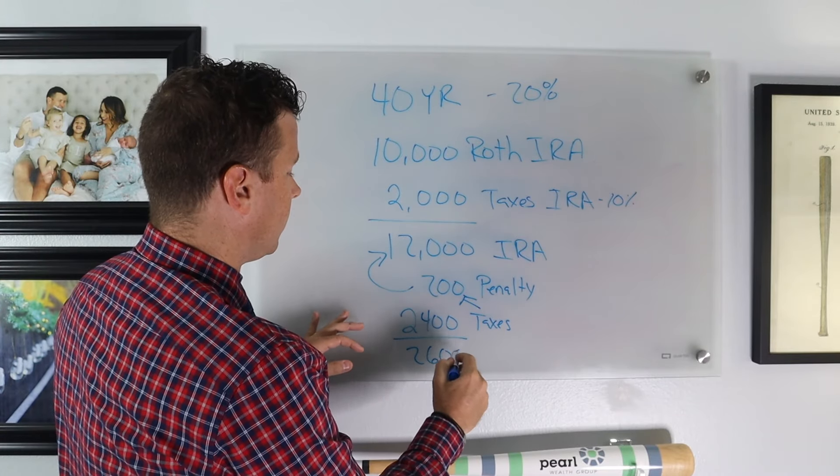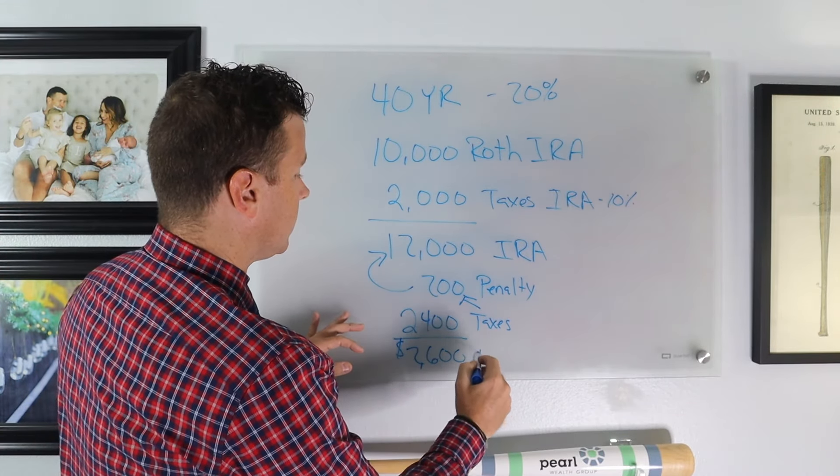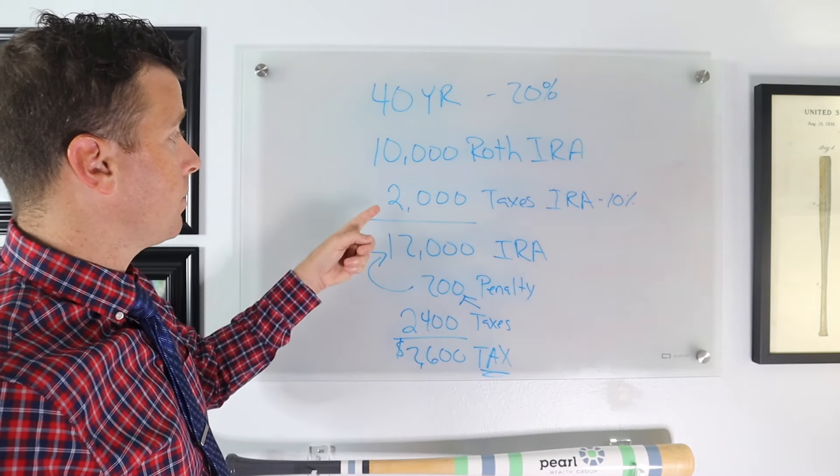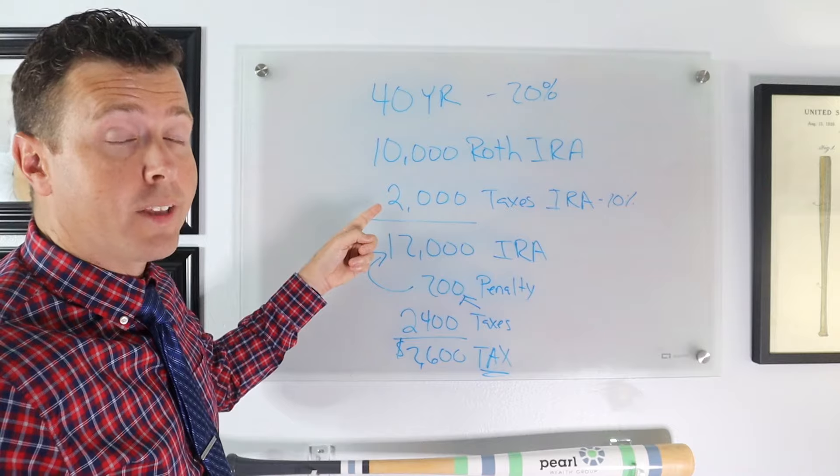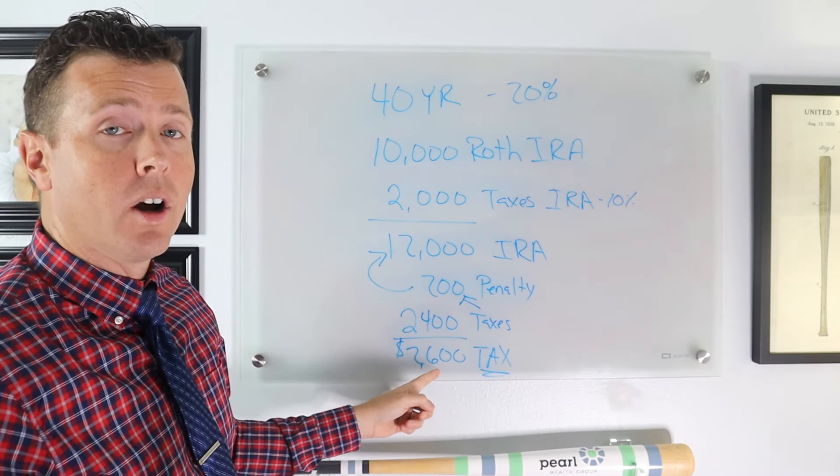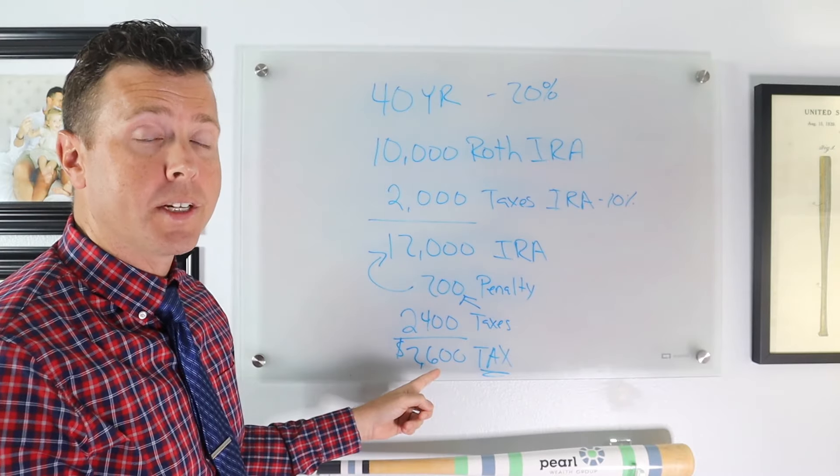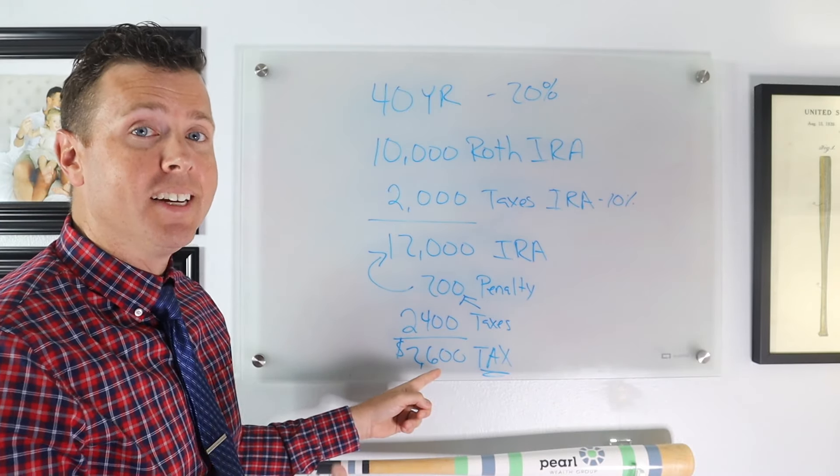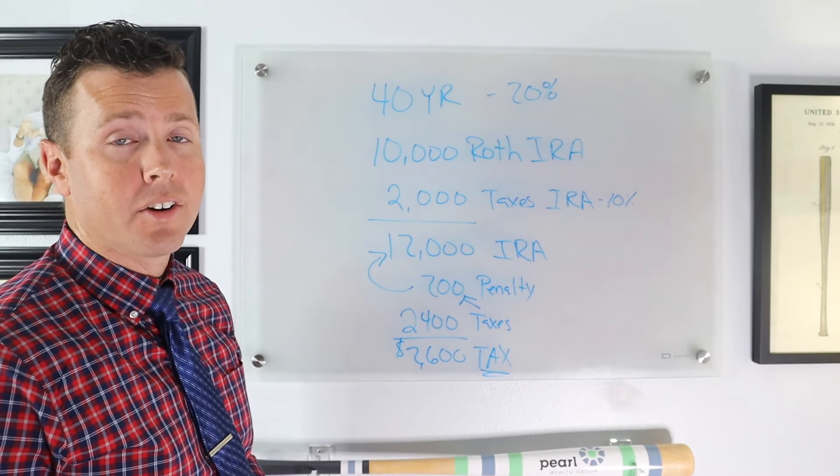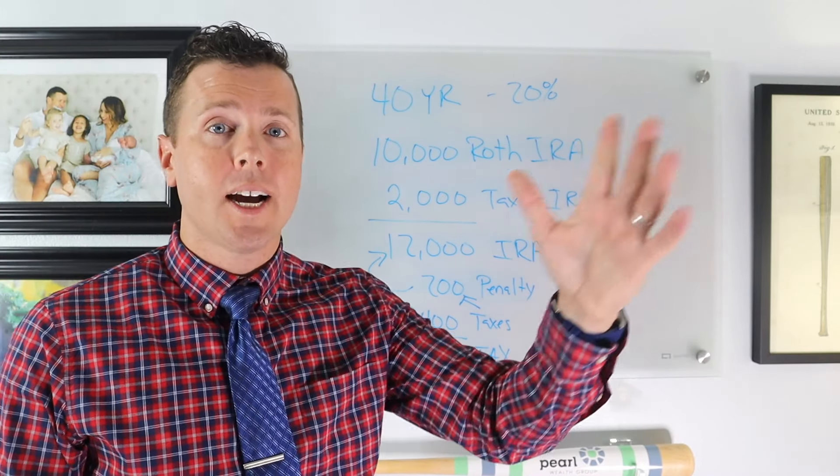So what's that? $2,600 is his total tax burden. So instead of his total tax burden being $2,000, it's now $2,600, an extra $600 because he used his IRA to pay the taxes. And he lost $2,600 forever because it went to the IRS.